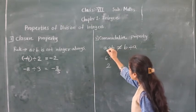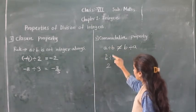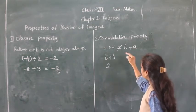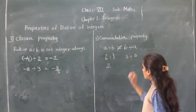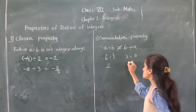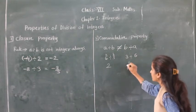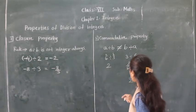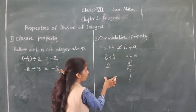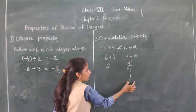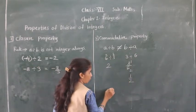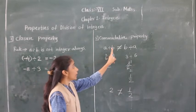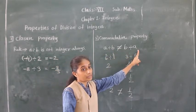Now B divided by A means 3 divided by 6. For 3 divided by 6: 3 twos are 6, so the answer is 1 upon 2. A divided by B gave us 2, and B divided by A gave us 1 upon 2. So 2 is not equal to 1 upon 2, meaning A divided by B is not equal to B divided by A.